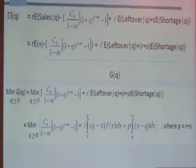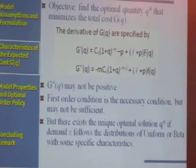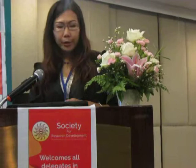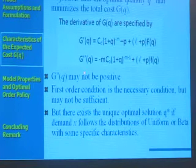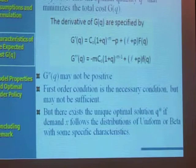To find the optimal order quantity, we need to understand the characteristics of the expected cost function G(Q). Taking the first and second derivatives of G(Q), we can see that in the second derivative there are both negative and positive terms. Therefore, we cannot determine the sign of the second derivative — it could be negative or positive — meaning there is no guarantee that the cost function is convex. However, we are able to show that if demand follows a uniform distribution, then the optimal order quantity Q* is unique and exists.